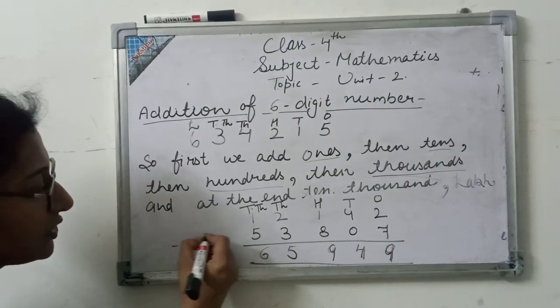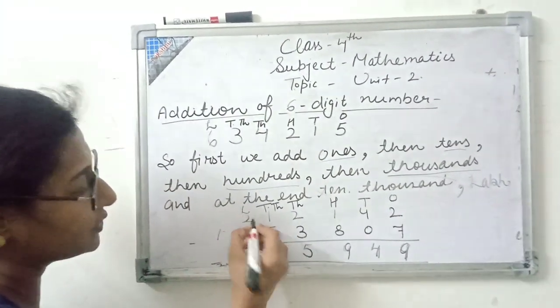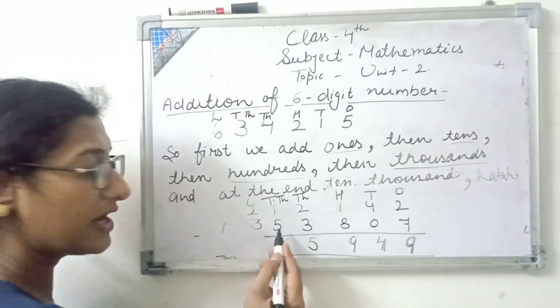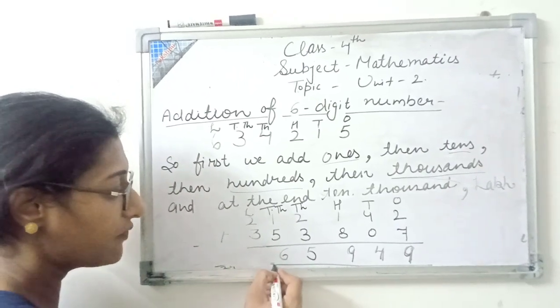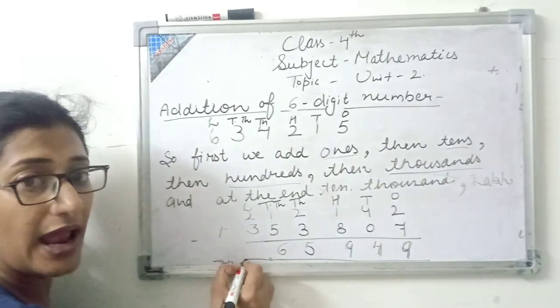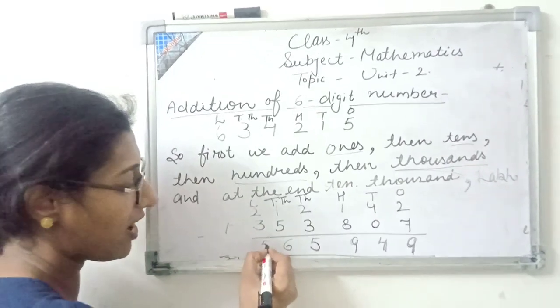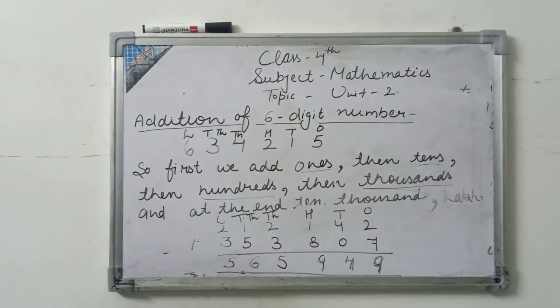For example, suppose at lakhs place we have 2 and 3. Then 10,000th we already added: 5 plus 1, 6. After then, we will add at lakhs place: 2 plus 3, 5. This is the addition of 6-digit numbers.